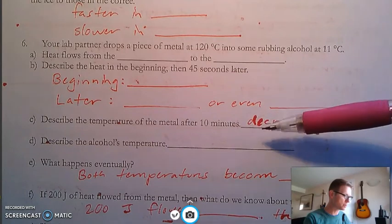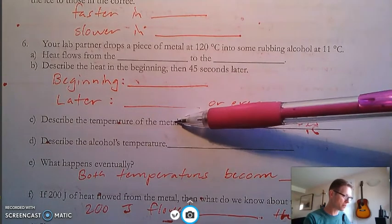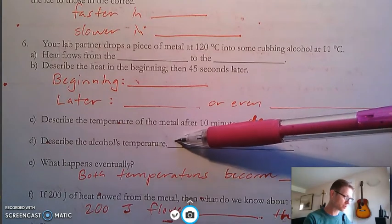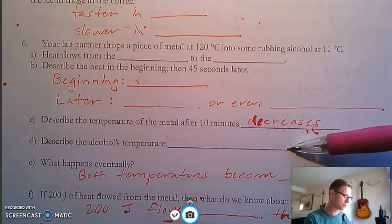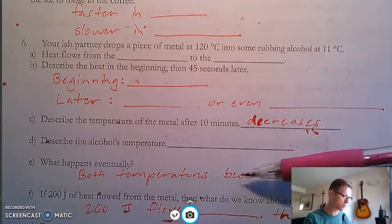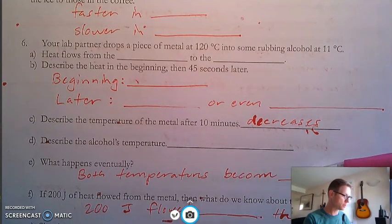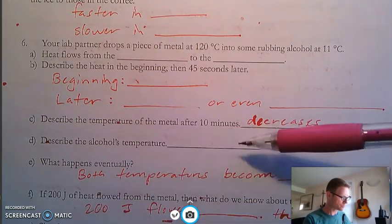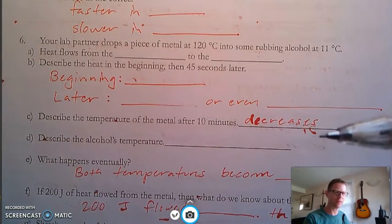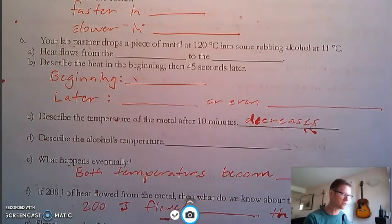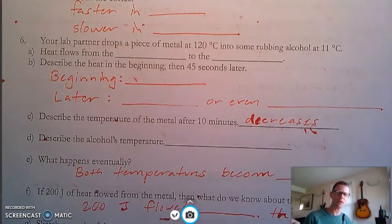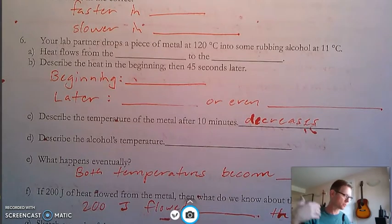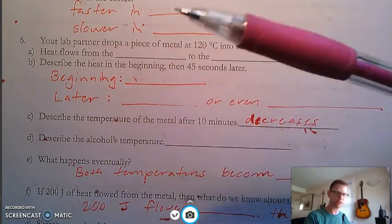Part C. After 10 minutes, the temperature decreases for the metal, but the alcohol's temperature, part D, after 10 minutes, it increases. Eventually, both temperatures become equal. Now, this whole 200 joules thing, I explained this before, but if you have 200 joules flowing out, that means 200 joules flow into the alcohol. That doesn't mean a total of 400 joules flow. It's like if I give you 200 dollars. I lose 200 joules, 200 dollars. You gain 200 dollars. Same thing. One's loss is the other's gain.